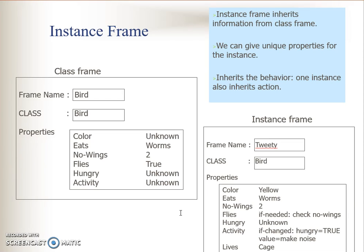This is an example of an instance frame of the bird. You have the bird frame and this is the instance frame of Tweety. There is also if-change and if-needed. For flies, if needed, you have to check number of wings: if number of wings is less than 2, Tweety walks; if number of wings is equal to 2, then flies is true. Activities also depend on hungry: if hungry is true, meaning Tweety is hungry, then the value will change to make noise.